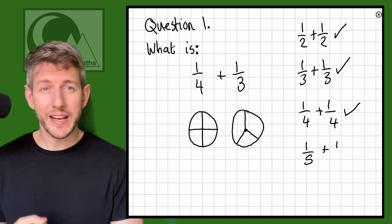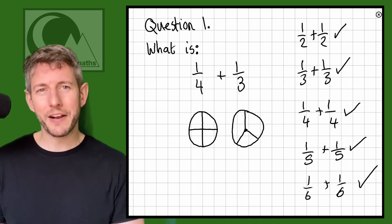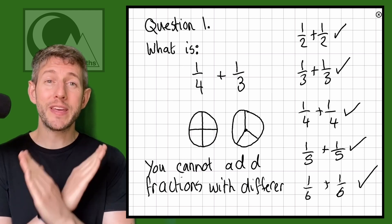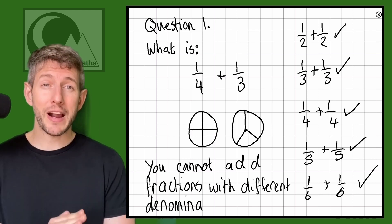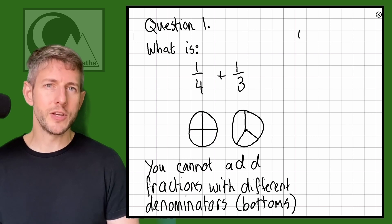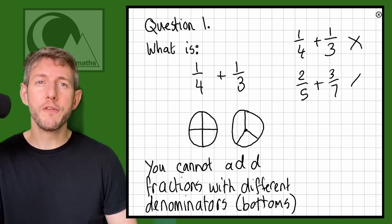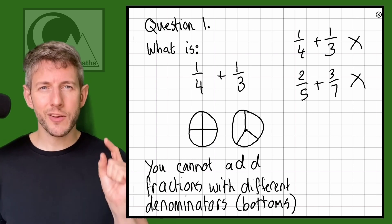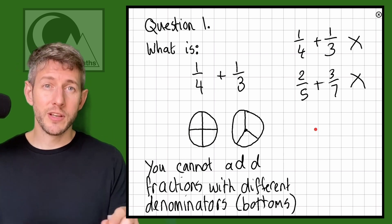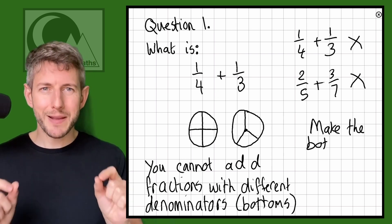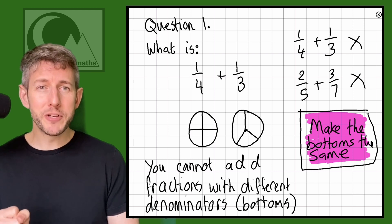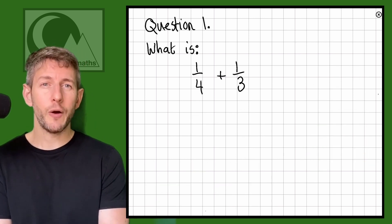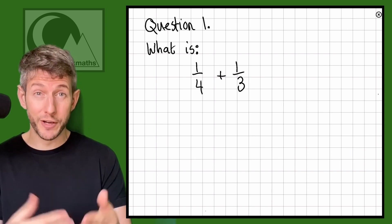With adding fractions we can add halves to halves, thirds to thirds, quarters to quarters, fifths to fifths, sixths to sixths — but we absolutely cannot add fractions of different sorts. I can't do a quarter add a third, I can't do two fifths add three sevenths, unless I make a change to make the fractions the same sort. If you joined me for tutorial 15 you will have seen how we can simplify fractions and how fractions can be equivalent to different things.